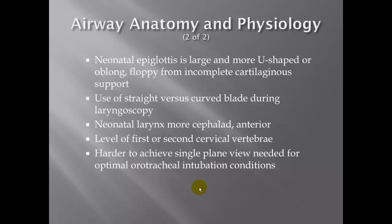The neonate's epiglottis is larger and more U-shaped or oblong, floppy from incomplete cartilaginous support, making it harder to control with a blade. The use of a straight blade is suggested over a curved blade during laryngoscopy. The neonatal larynx is more cephalad or anterior, at the level of the first or second cervical vertebra, making it harder to achieve the single-plane view needed for optimal oral tracheal intubation. The adult airway is roughly the size of a dime; neonates are about one-third that size.